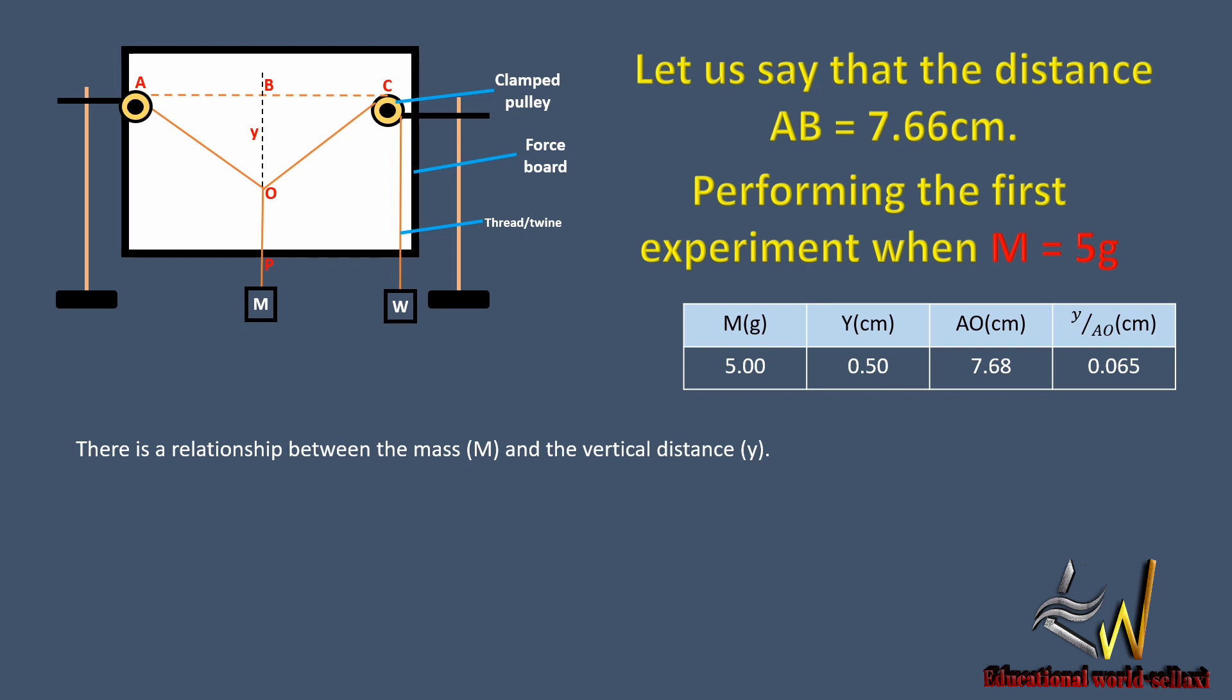This relationship is going to help us, so we need to get that. The mass M is directly proportional to the vertical displacement y, because the bigger the value of the mass, the bigger the distance. So we say that M equals ky, where k is the constant of proportionality.